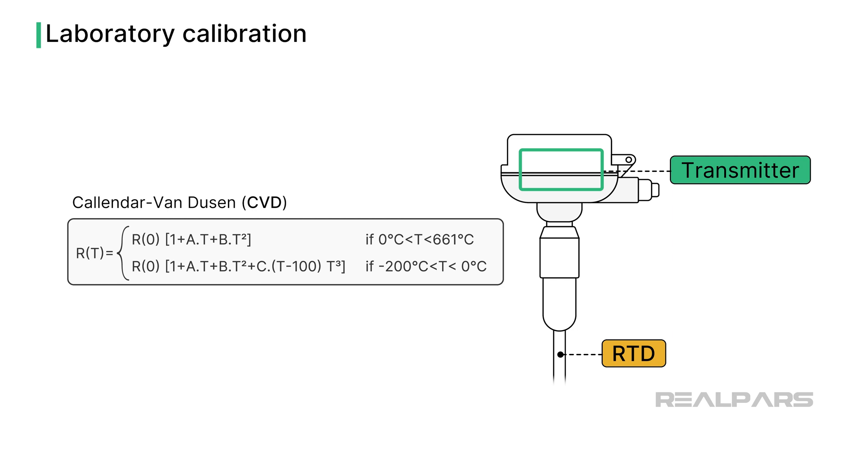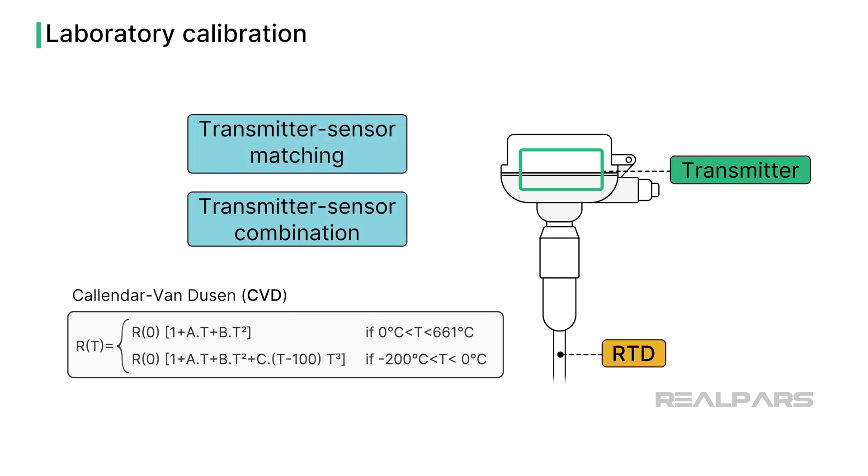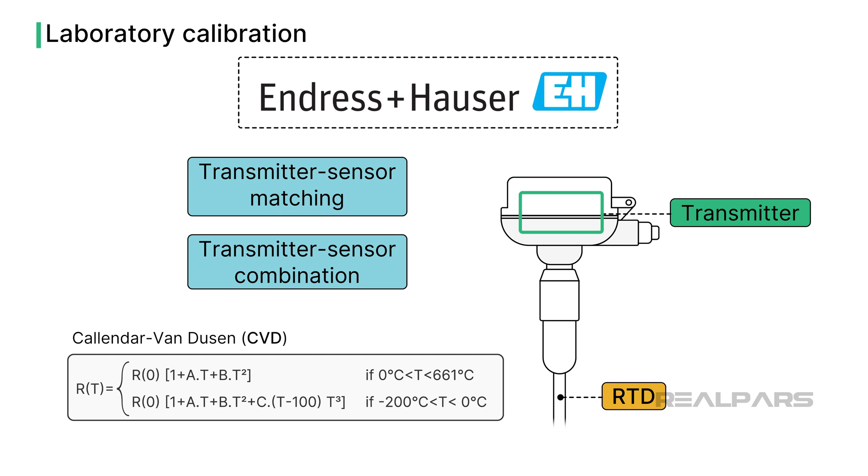Several calibration options are available when purchased as a transmitter-sensor combination, including transmitter-sensor matching using the specific RTD CVD coefficients. Endress and Hauser and several other instrument manufacturers provide such laboratory or factory calibration services.